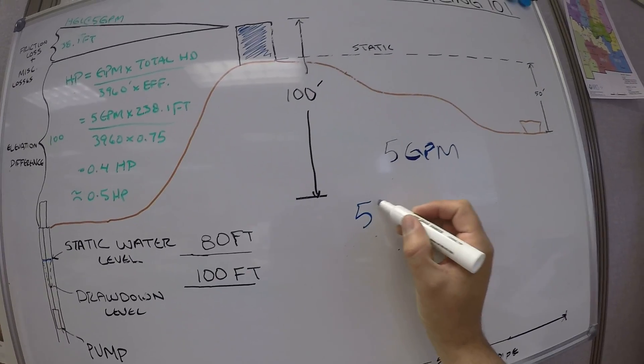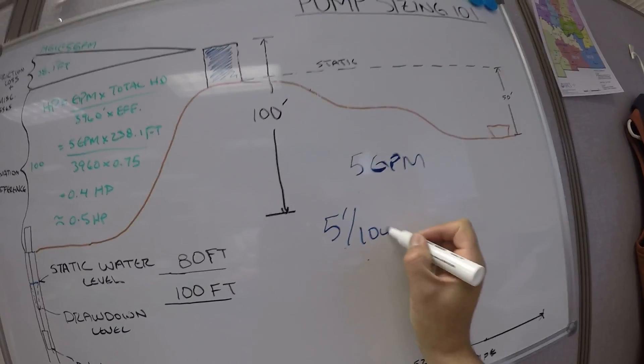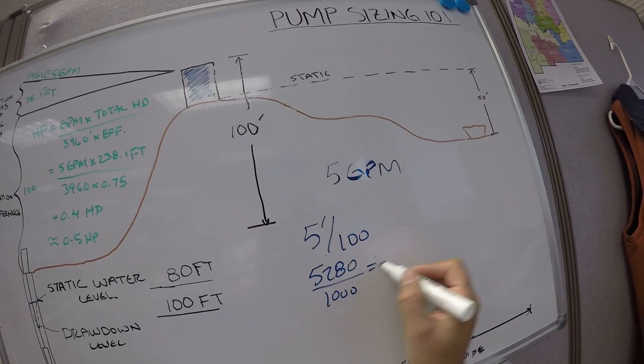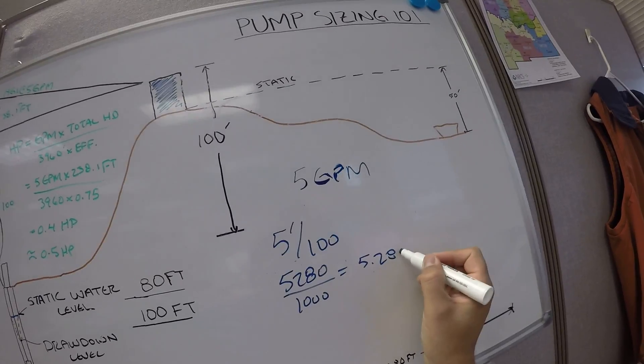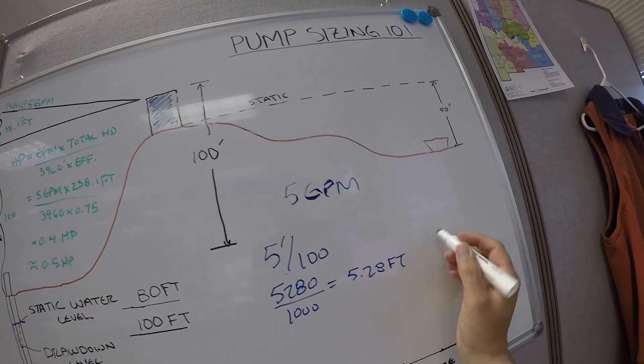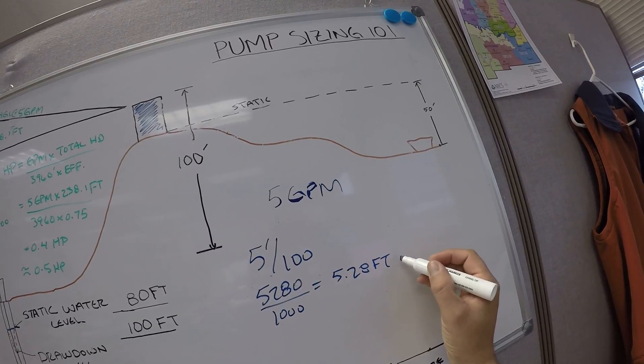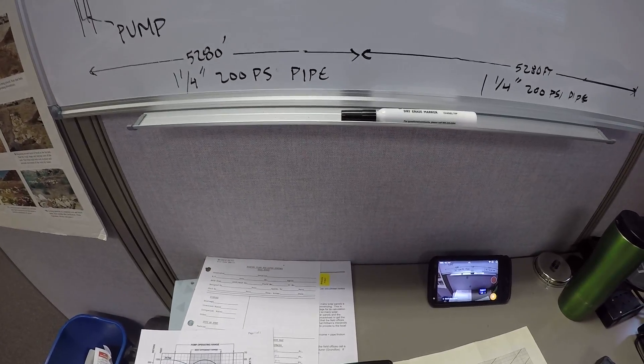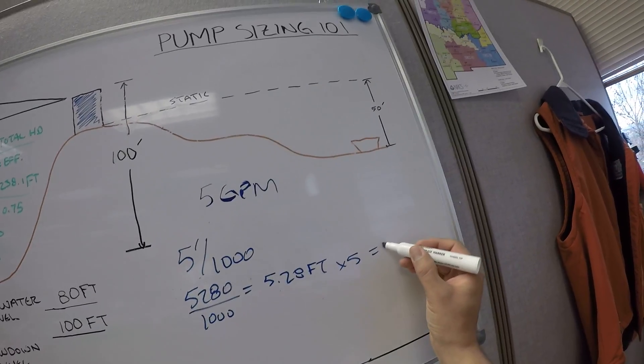I think I read the chart wrong last time. 5 feet per thousand, 5,280 divided by a thousand, that's 5.28. And we're losing 5 feet per thousand, so 5.28 times 5, that's 26.4 feet.